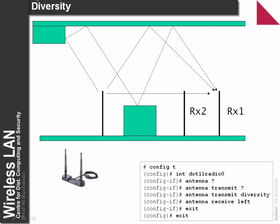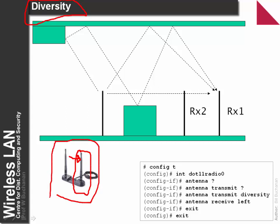We can overcome this with diversity — placing an antenna a small distance away from a null path, which typically produces a reasonable signal strength. Our Cisco antenna has two antennas but can't use both simultaneously. The Cisco unit selects the antenna with the best receiving strength. In the radio interface, we can define diversity so it picks the best antenna, or we can select left or right. If there's a null at one antenna, the access point will use the other instead.